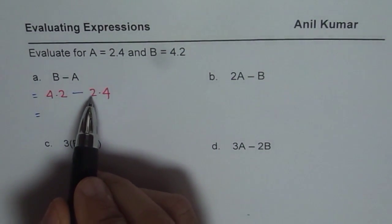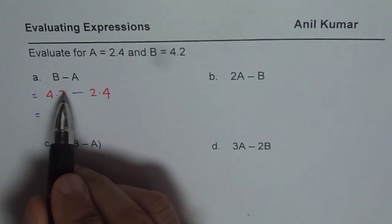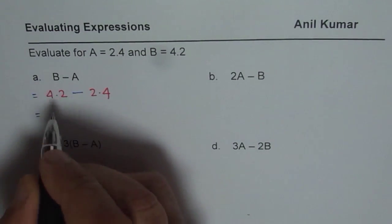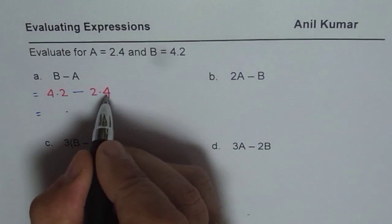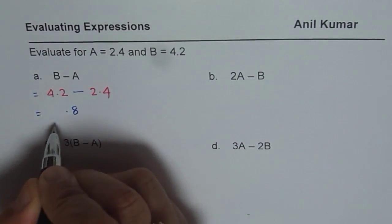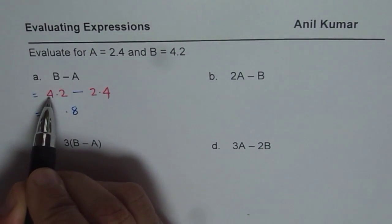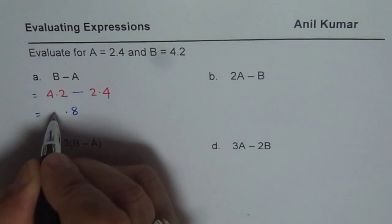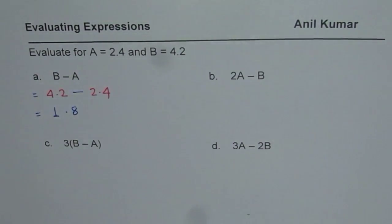Now 4.2 take away 2.4. You need to borrow from 4, so you get 12. When you get 12, taking away 4 leaves you with 8. When you borrowed, this became 3. So 3 take away 2 is 1. You get 1.8 as your answer.